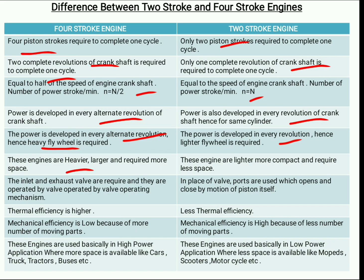4 stroke engines are heavier, larger, and require more space, whereas 2 stroke engines are lighter, more compact, and require less space. In 4 stroke engines, inlet and exhaust valves are required and they are operated by a valve operating mechanism. In 2 stroke engines, ports are used which open or close by the motion of the piston itself — so 2 stroke engines have ports whereas 4 stroke engines have valves.